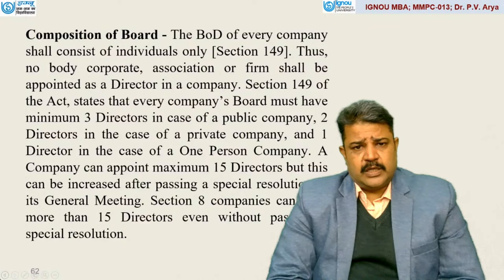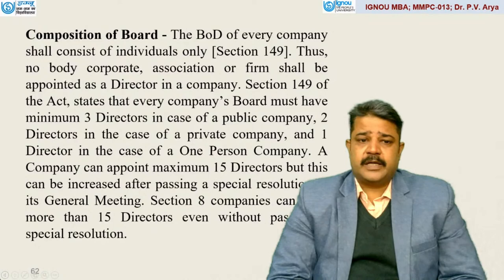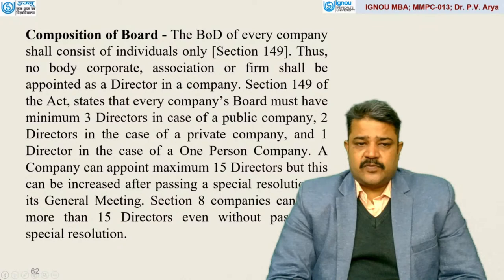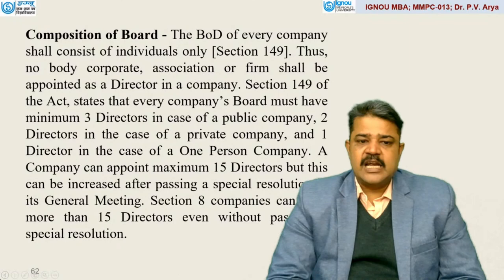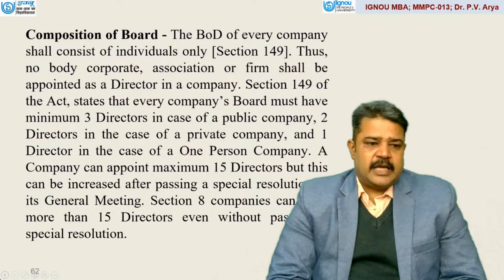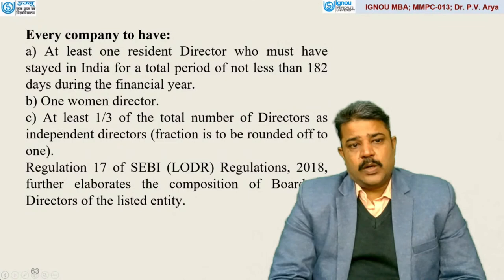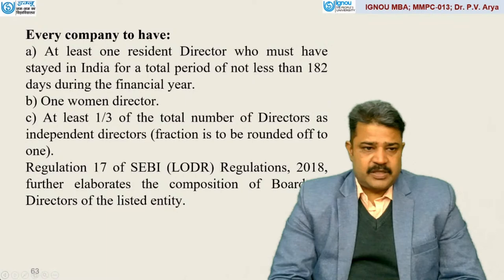The composition of board: every company shall consist of individual directors — no body corporate, association, or firm shall be appointed as a director. Under Section 149 of the Act, every company board must have three directors in case of a public company, two directors in case of a private company, and one in case of OPC. A company can appoint a maximum of 15 directors, but this can be increased after passing a special resolution. Section 8 companies can have more than 15 directors even without passing a special resolution. Every company must have at least one resident director, one woman director, and at least one-third of the total number of directors as independent directors.